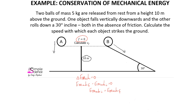Starting with object A, our initial mechanical energy equals our initial potential energy plus our initial kinetic energy. Potential energy is the product of mass, gravity, and height above the surface of the earth. Kinetic energy is one half times mass times velocity squared. Initially, this object has a mass of 5 kilograms, gravitational acceleration of 9.8, a height of 10 meters, and a velocity of zero, so kinetic energy initially is zero.